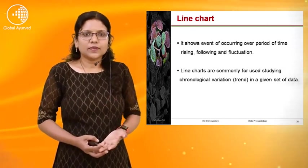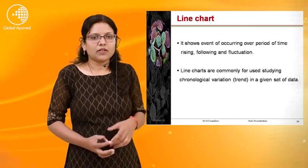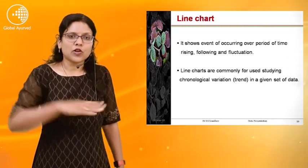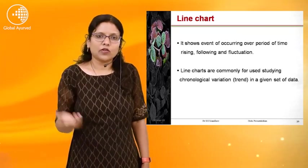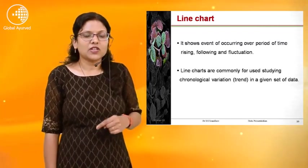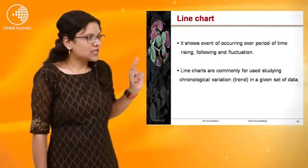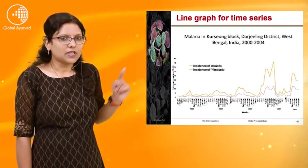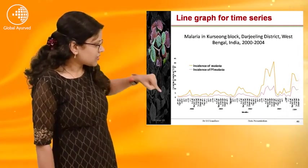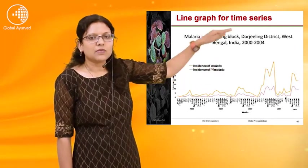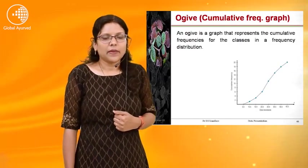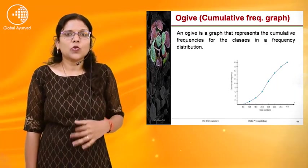Next for quantitative data is the line chart. It shows events occurring over a period of time. If an incidence has been rising, falling, or fluctuating over days or a period, and we want to see and show that trend, we use the line chart. Line charts are commonly used for studying chronological variation — that is, trends in a given set of data. For example, malaria cases from 2002 to 2004 show year-wise variation using a time series line graph.